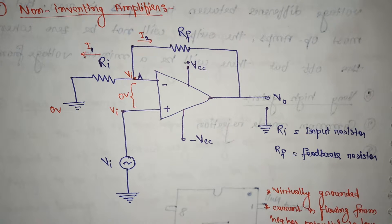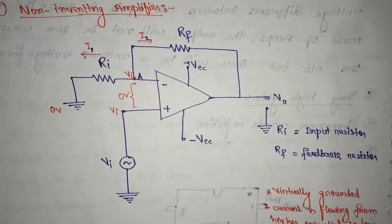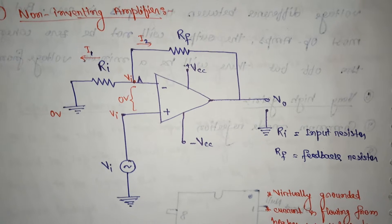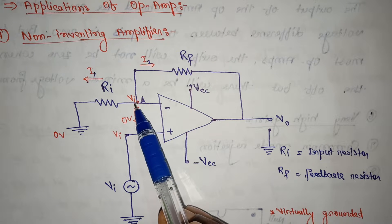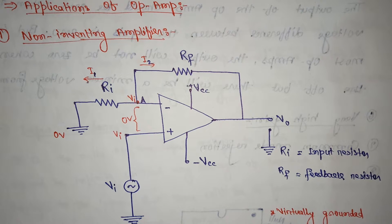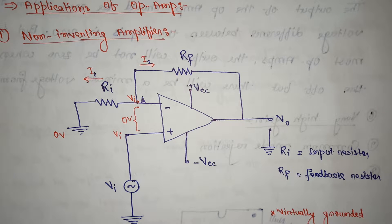From the virtual ground concept, the voltage at the inverting input can also be written as VI. The other terminal is grounded, so we write zero volts there. We need to find the gain A equal to V-naught divided by VI.